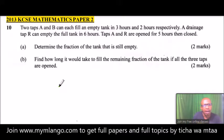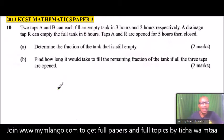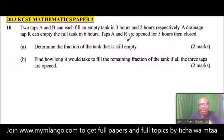Number 10. It's a very simple question. We are told two taps A and B can fill an empty tank in three hours and two hours respectively. A drainage tap R can empty the full tank in six hours. Tap A and R are open for five hours then closed.